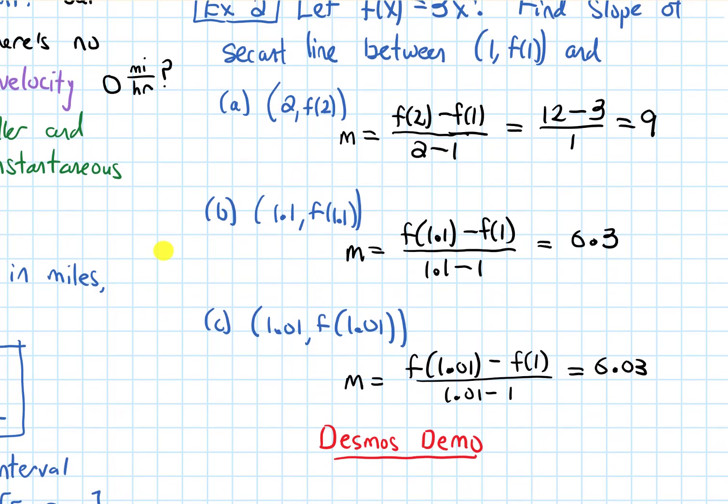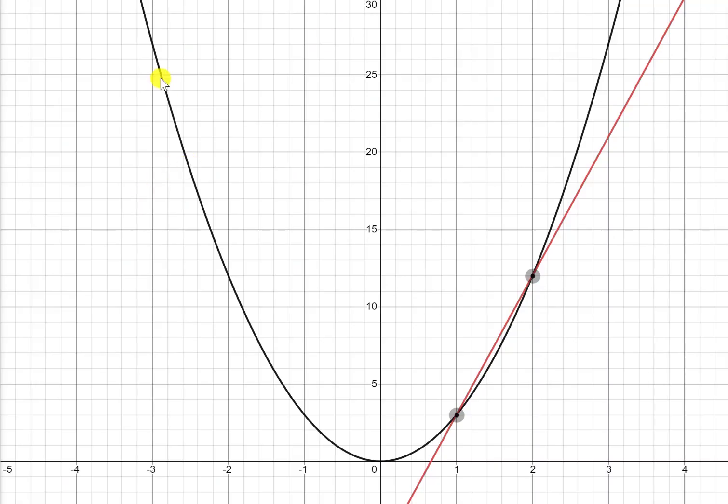I want to show you what this looks like in the online graphing calculator Desmos. Alright, so here we are in Desmos, and we have our parabola, 3x squared, and I've formed a secant line connecting 1 comma f of 1, and right now the other point is at 2 comma f of 2.